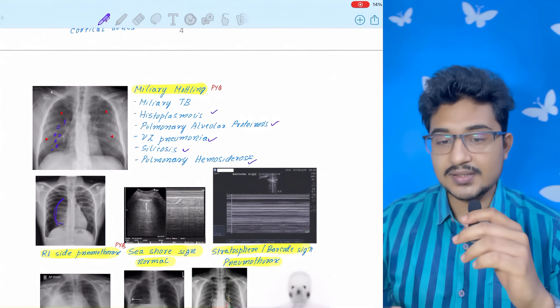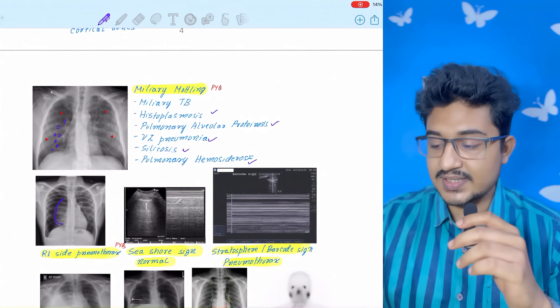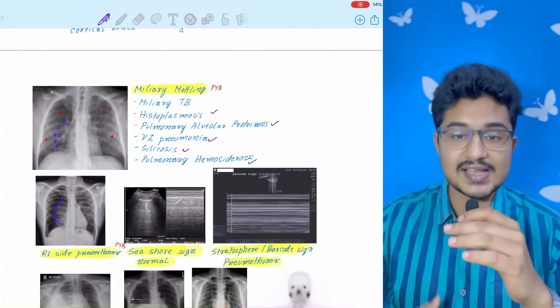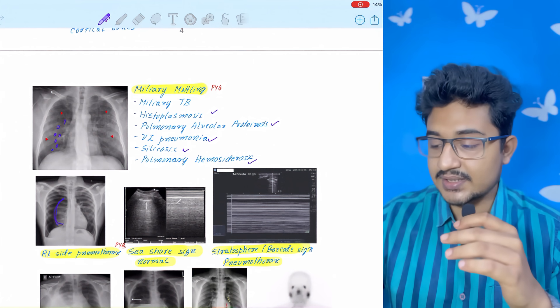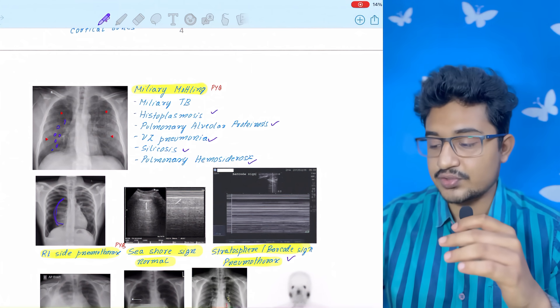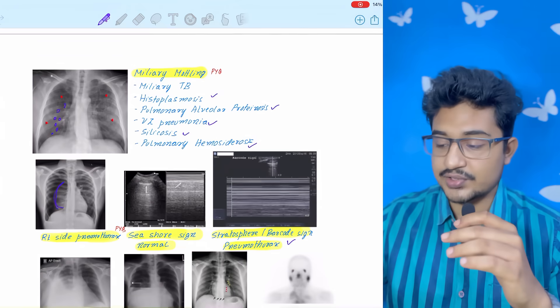If it is a normal chest, then you will see the seashore sign. What happens is there is movement, so everything moves. In pneumothorax, everything will be still, so it is a barcode or stratosphere sign, which is positive in pneumothorax.